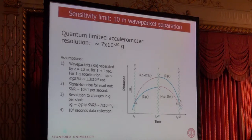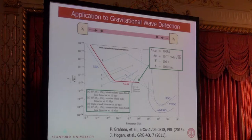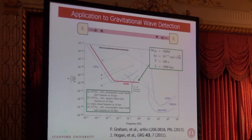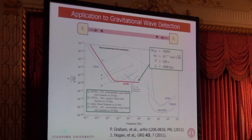That's about a billion times better than the kind of resolution we have today for terrestrial accelerometers, and it raises the question: what the heck would you do with such an instrument? One area that we've been focused on in recent years is to seek ways of applying these atom interferometry techniques to detection of gravitational radiation. I don't have time to motivate why it's interesting to detect gravitational waves, but I'll put up a chart which shows the strain sensitivity of a detector as a function of the frequency of the gravitational wave against some popular astrophysical targets.